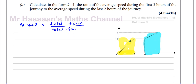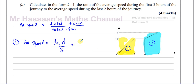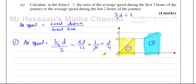For section one, the average speed is going to be the total distance, which we call three-quarters d, divided by the total time taken, which is three hours. So that's three-quarters d divided by three, which is three-quarters d times one-third. That gives you d over four. So the average speed in terms of d is d over four.